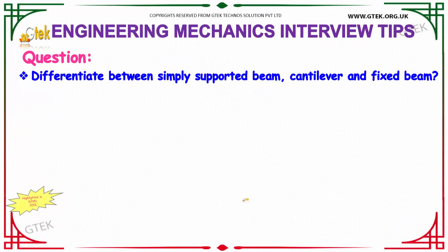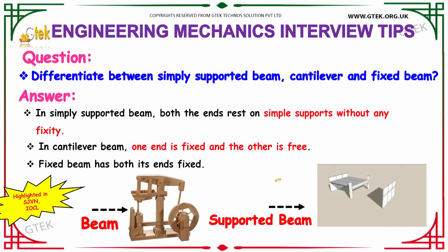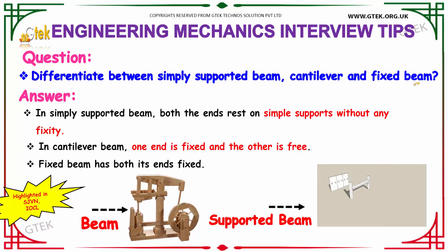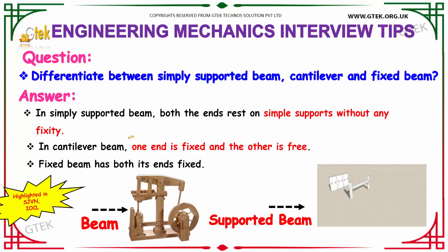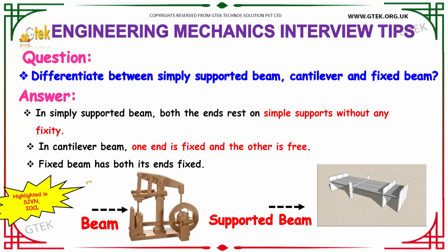Differentiate between the simply supported beam, cantilever beam, and fixed beam. The simply supported beam has both ends resting on simple supports without any fixity. The cantilever beam has one end fixed and the other end free. Whereas in terms of the fixed beam, it has both ends fixed.